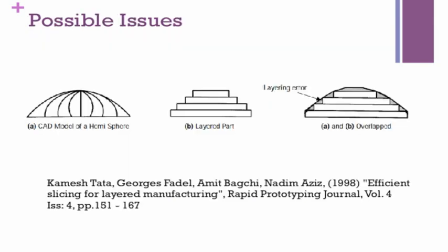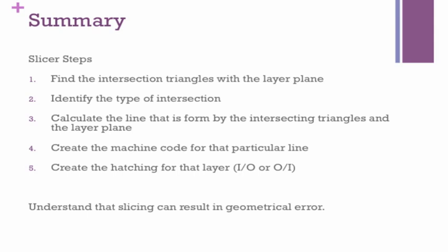Moving on to a possible issue in slicing — called slicing error. If you have a CAD model with a curved surface, such as a hemisphere, and you slice it, you get a layered part where the curve is no longer accurately represented. This is similar to the STL tessellation issue; slicing produces a step-like error. You can reduce this by increasing the resolution of your part.